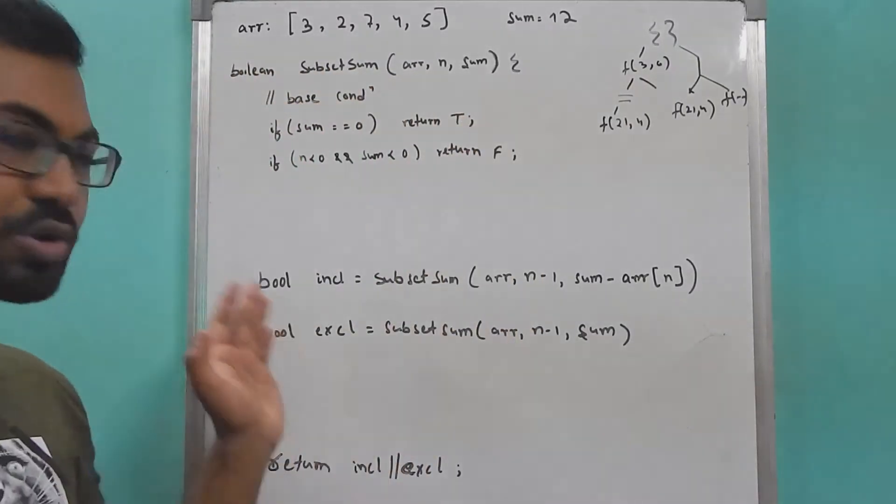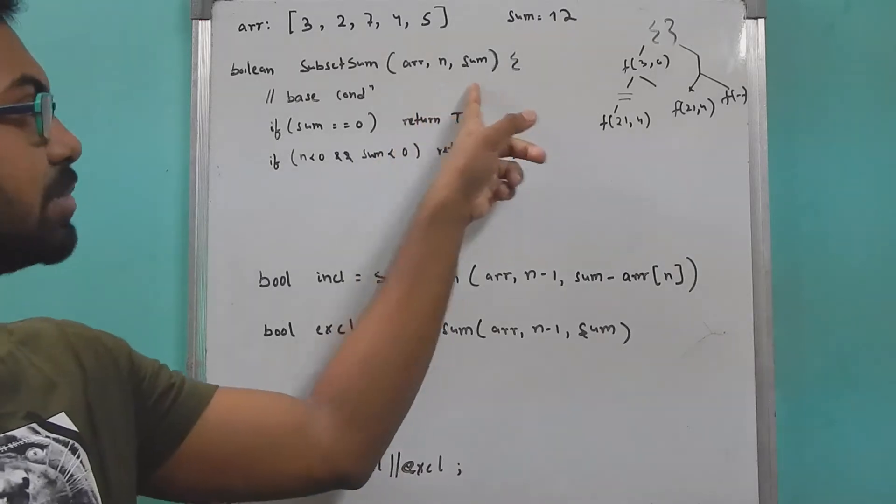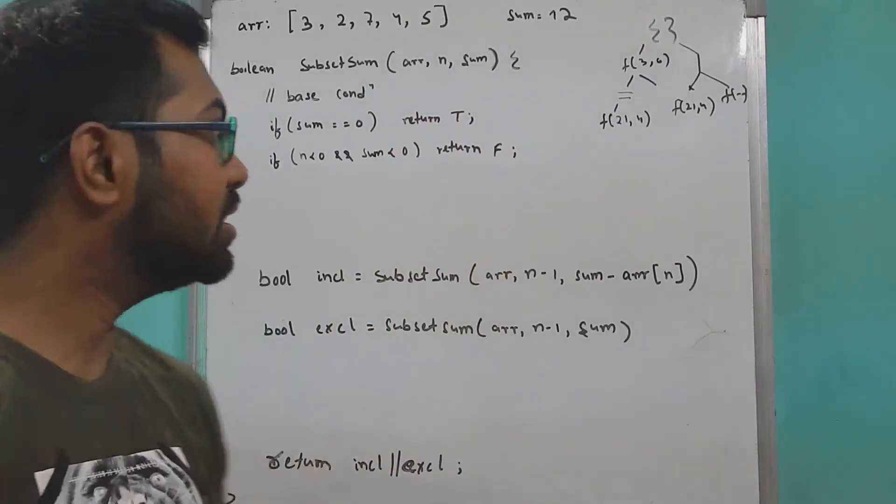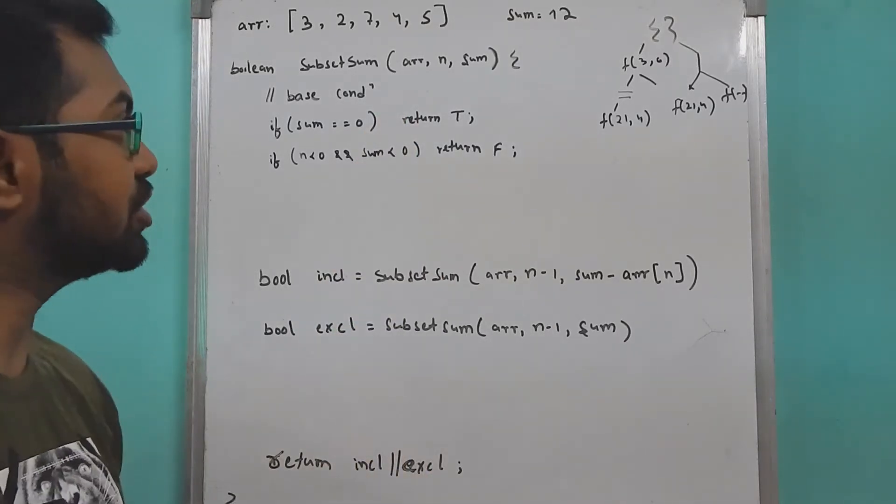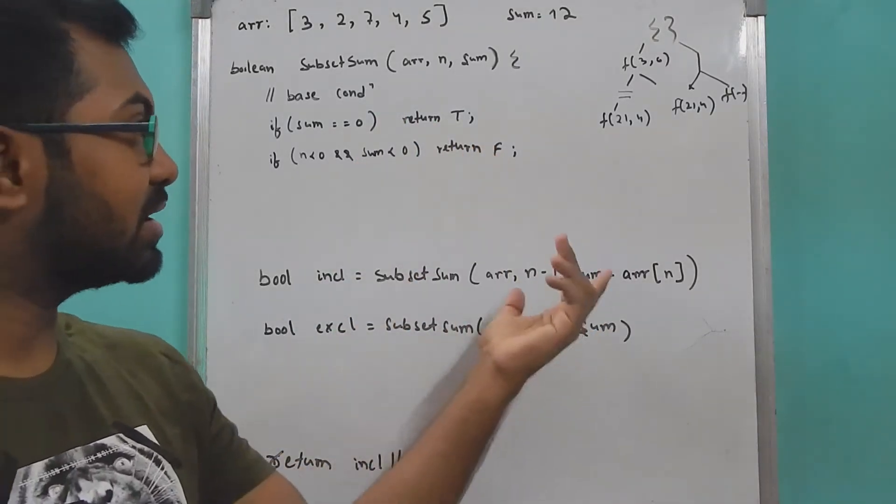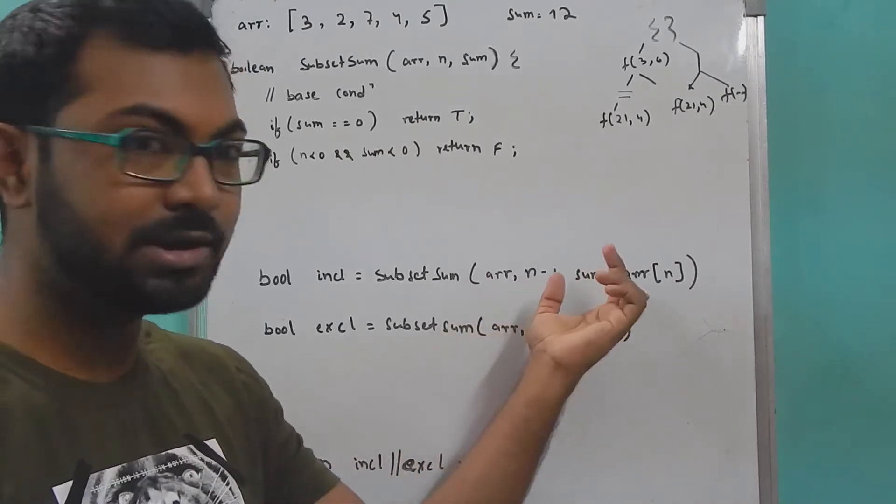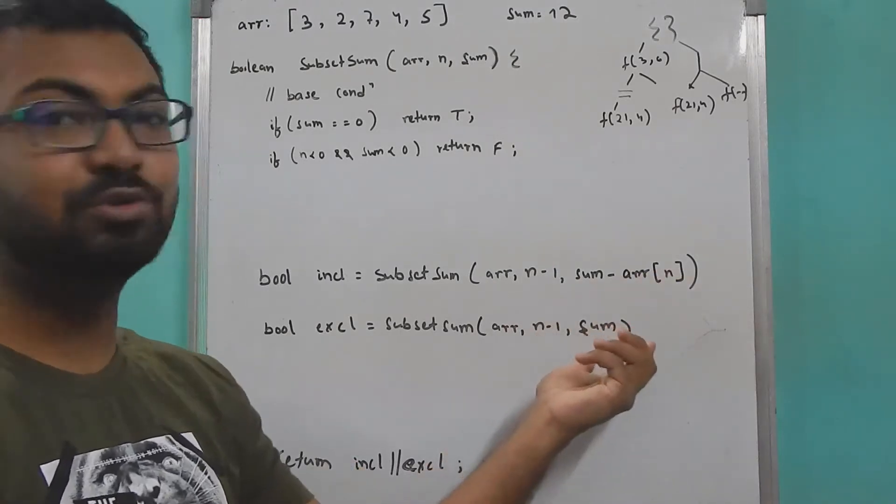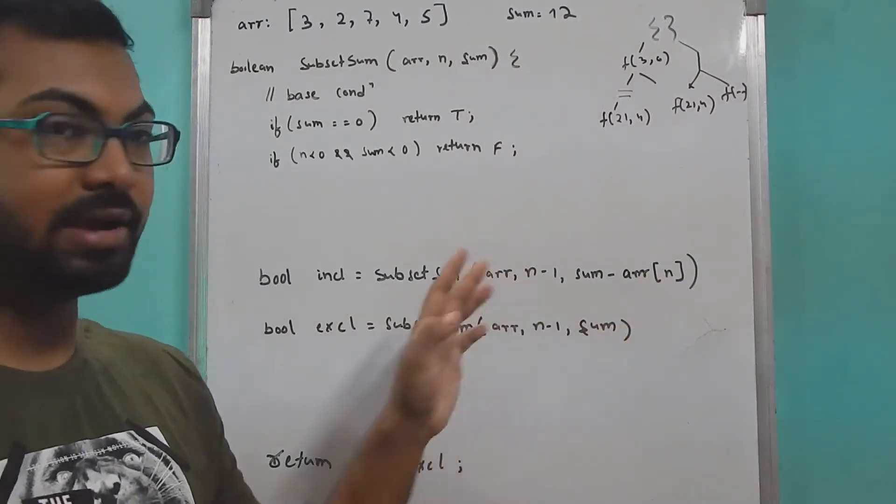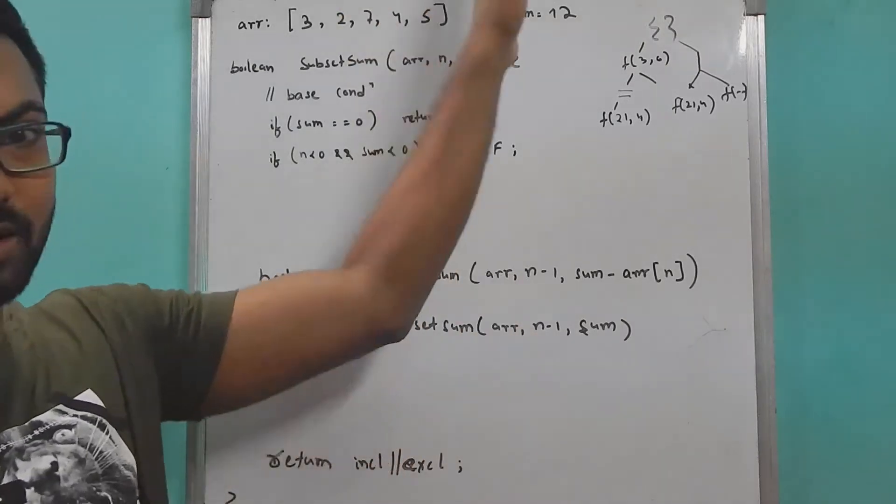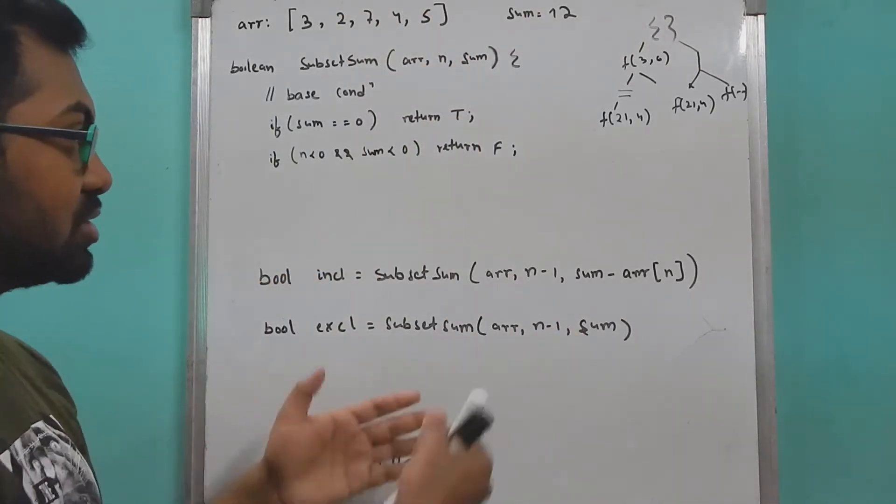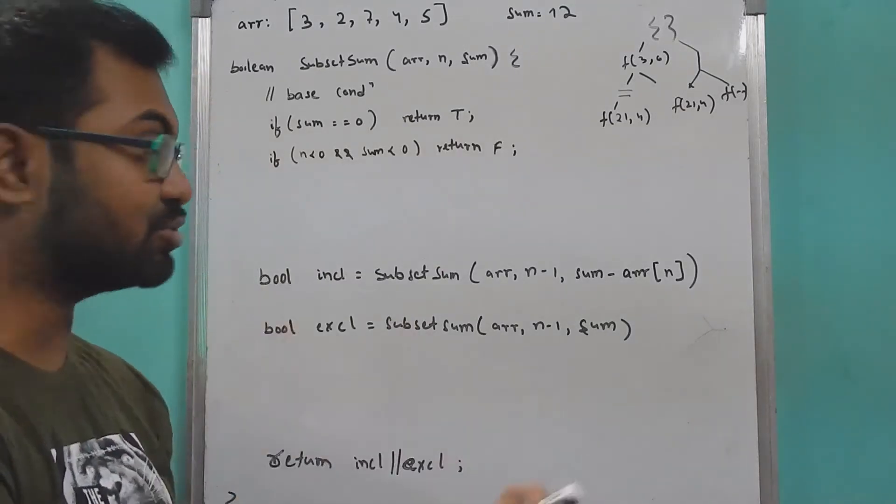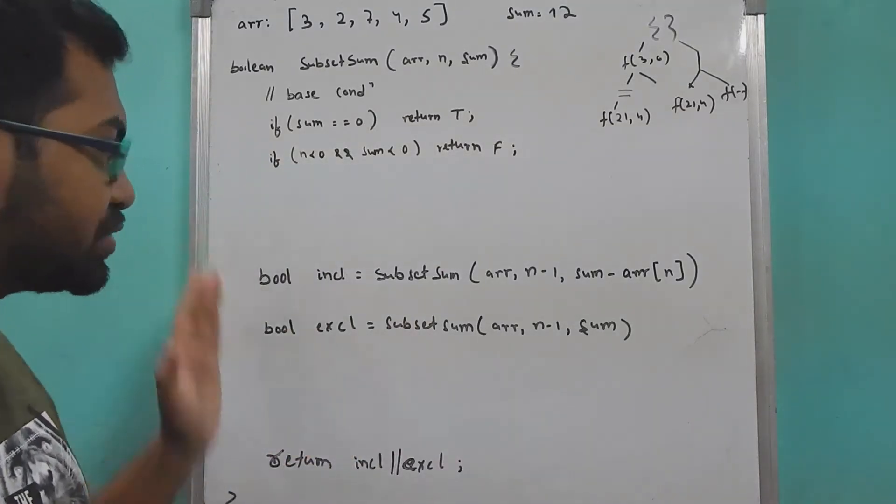Now let's jump to the code. This is the code I wrote - more or less - I've just removed some parameters. You can find the source code in the description for that backtracking code. At every step we are either taking that element by subtracting it from the total sum, or we are excluding that element. We're decrementing because we're starting from the last and coming towards the end where we're checking for the base condition, which is sum should get to zero.